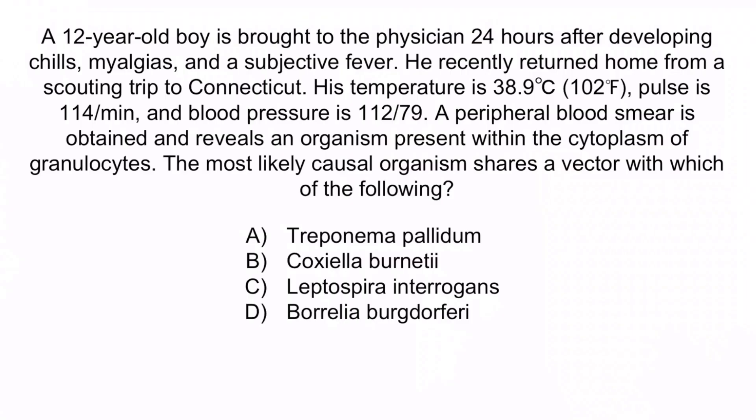A is incorrect because Treponema pallidum is a sexually transmitted infection. B is incorrect because Coxiella burnetii is transmitted through the aerosols of cattle and sheep amniotic fluid. C is incorrect because Leptospira interrogans is transmitted through water contaminated with animal urine. So again, the correct answer is D, Borrelia burgdorferi.